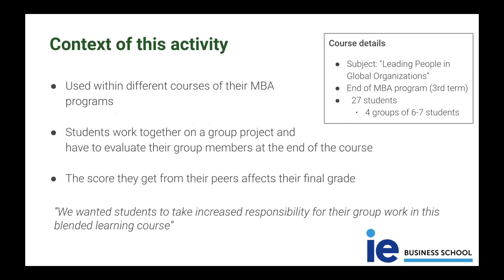They've used this in different courses of their MBA programs. The course I'm focusing on today is 'Leading People in Global Organizations,' a course at the end of the MBA program in the third term. There were 27 students in this course — much smaller groups than the example we've seen before. Within the course were four groups of about 6–7 students who had to do a group project together, and at the end they had to evaluate their group members. The score they received from peers affected their final grade.